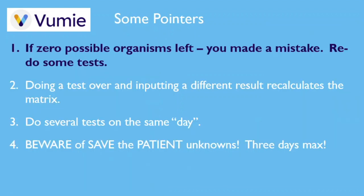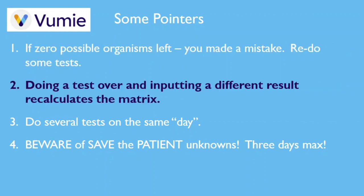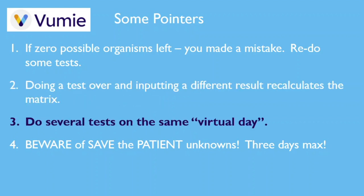Here are some pointers to help you. If you ever get to a point where no possible bacteria are left, you have made a mistake. Our software ensures that if you do your tests and interpret them correctly, you will always end up with a single unknown microbe. If you need to do a test over, simply select the medium again for that test and redo it. If your interpretation changes — you once thought it was negative but now you see it's actually positive — record the updated result; this should recalculate the ID matrix to put you back on track. Remember that you can do several tests and have several inoculated media in the incubator at the same time. No need to be part of the one-test-a-day crowd, and your instructor might reward you for economy of time.